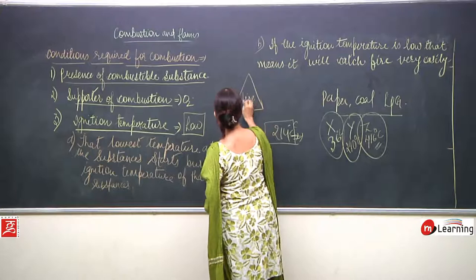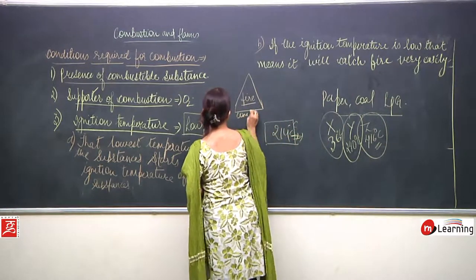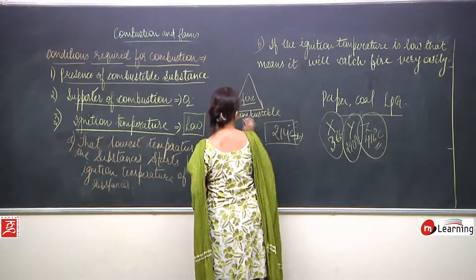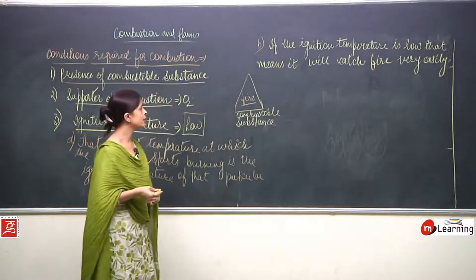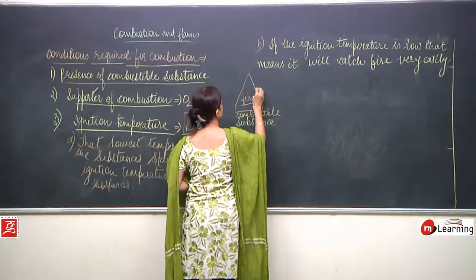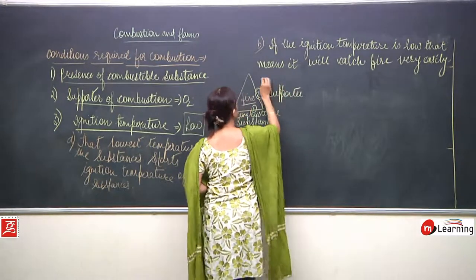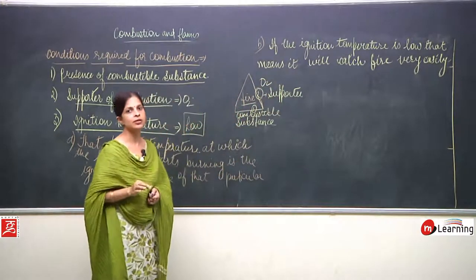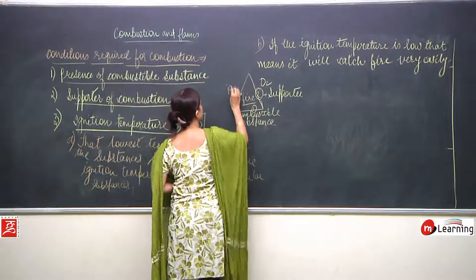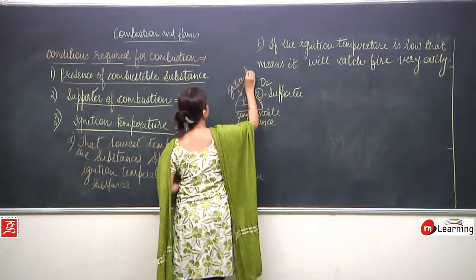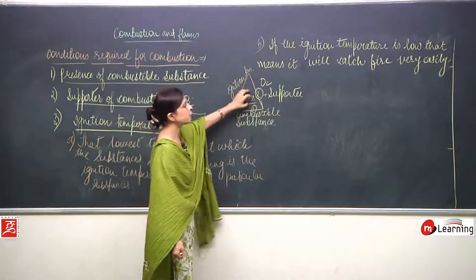Now we know three things which are required for a substance to burn. If I write 'fire' in the center, what are the three things required? First, the presence of the substance. Second, supporter — which is O2. Third, ignition temperature — it is necessary to reach that temperature where a substance can catch fire.